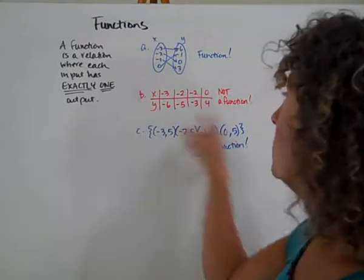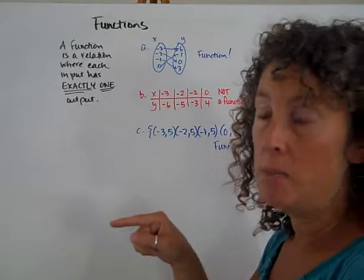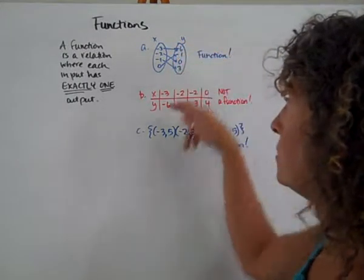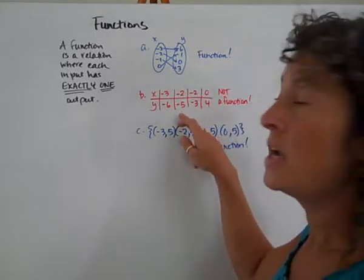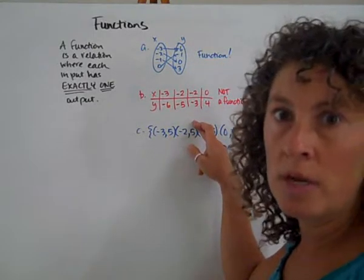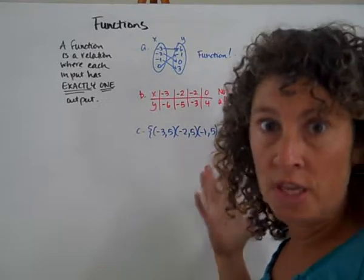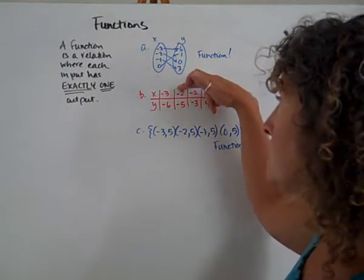This is definitely a function. The second one is set up as a table. Notice negative 3 will get me negative 6 if I'm dialing my phone. Negative 2 will get me negative 5, but negative 2 could also get me negative 3. So this is not a function because if I think about dialing my phone, if I dial negative 2,